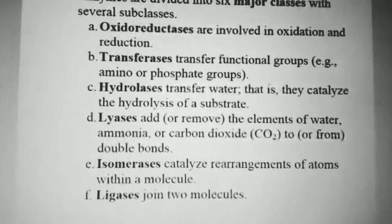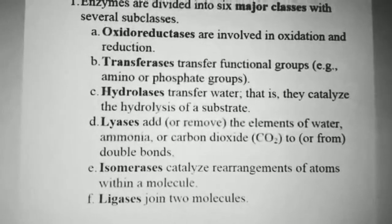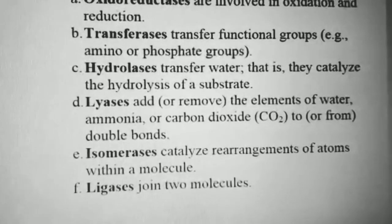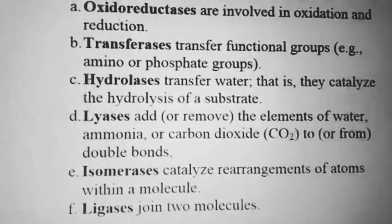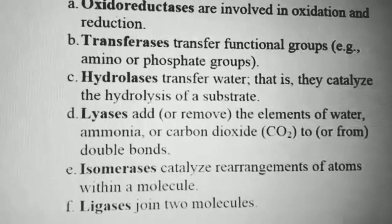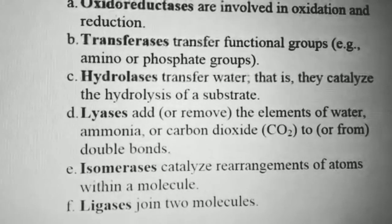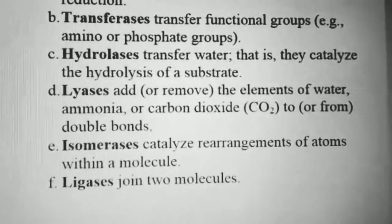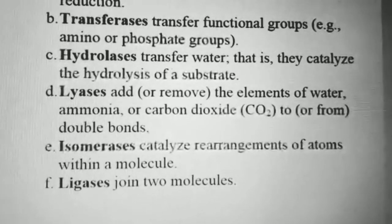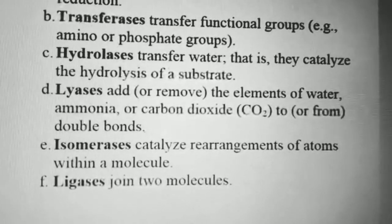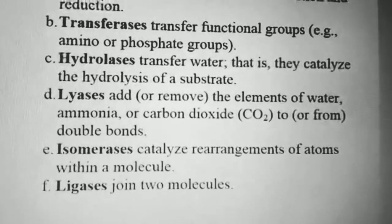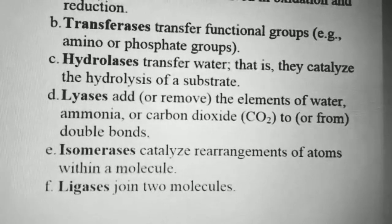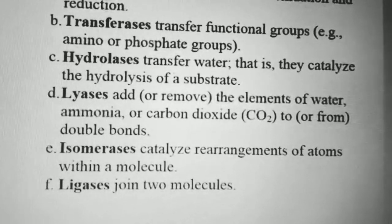Hydrolases catalyze the hydrolysis of a substrate — for example, the hydrolysis of ATP to ADP in energy production. Lyases add or remove elements of water, ammonia, or carbon dioxide to or from double bonds — they either add a molecule to a double bond or remove a molecule to form a double bond.